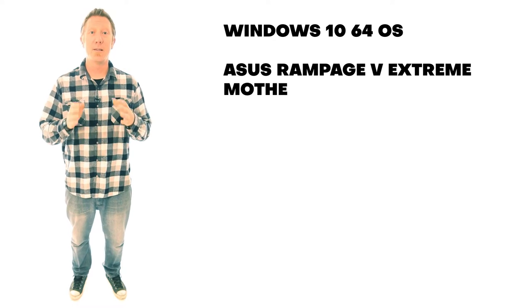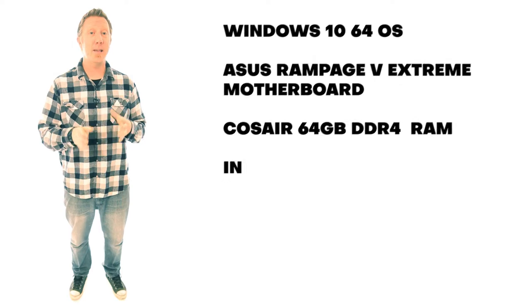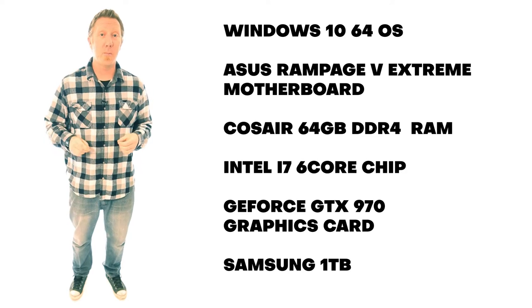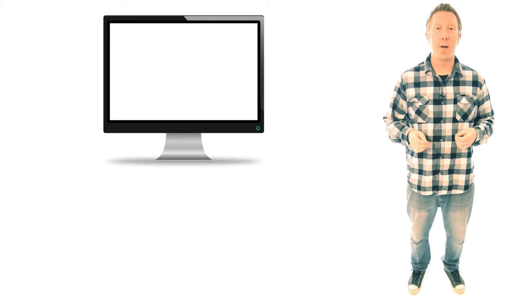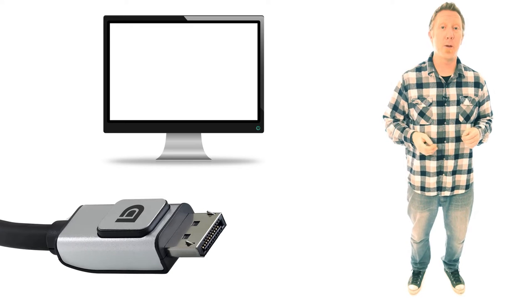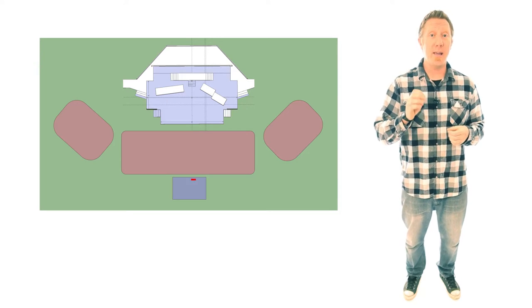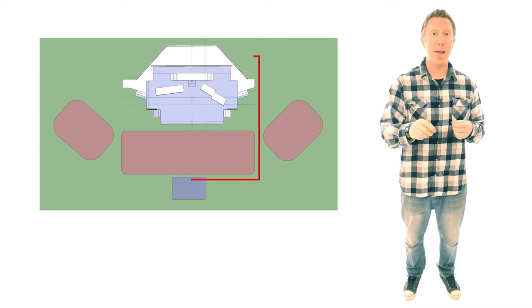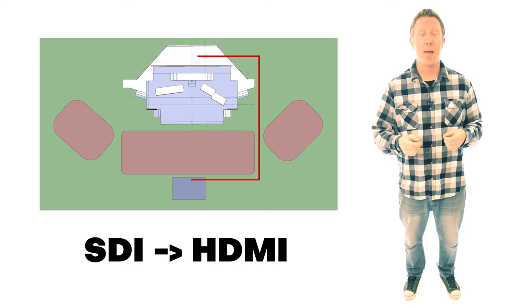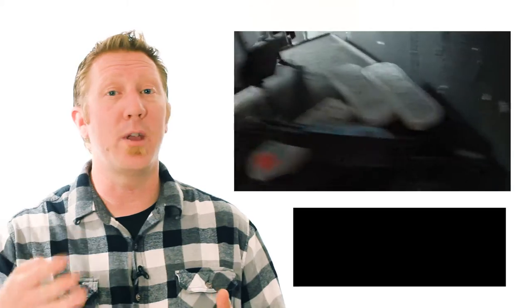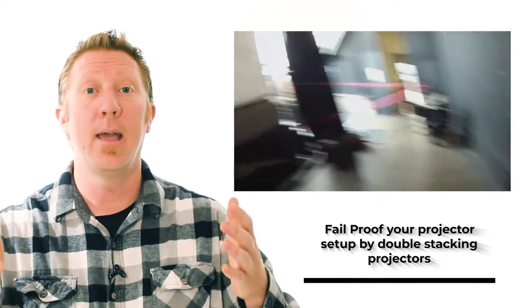My computer is Windows-based with a Rampage VX Extreme motherboard, 64 gigs of DDR4 RAM, an Intel i7 6-core chip, a GTX 970 graphics card, and a one-terabyte solid state hard drive. For my work monitor, I used the DisplayPort and plugged that into a 4K monitor for the Resolume interface. I used my HDMI port and converted that to SDI, then ran a 300-foot 3G SDI cord from my workstation to the back stage and converted that back into HDMI, then plugged that into an Optima 1080 short throw projector which threw 3,000 lumens onto the 200-inch screen at the back of the stage.